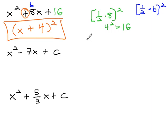Let's try another example. Here we have x squared minus 7x plus c, or the missing number. And again, we find that missing number by taking one half times b, which is negative 7 in this case, and then we square our answer.